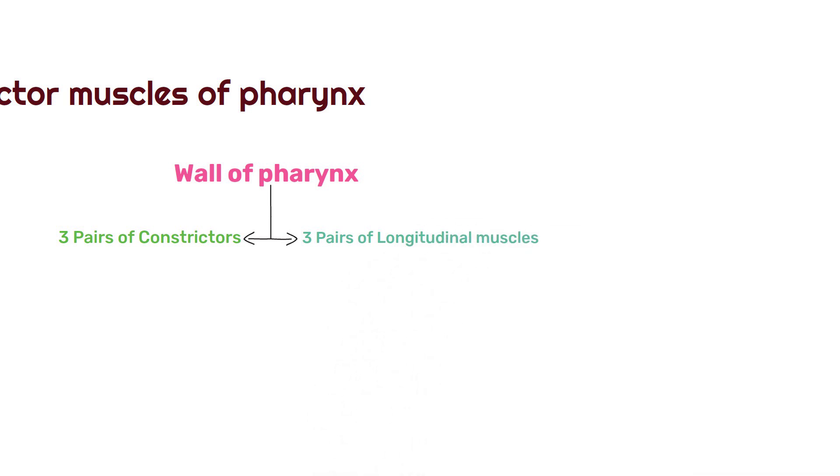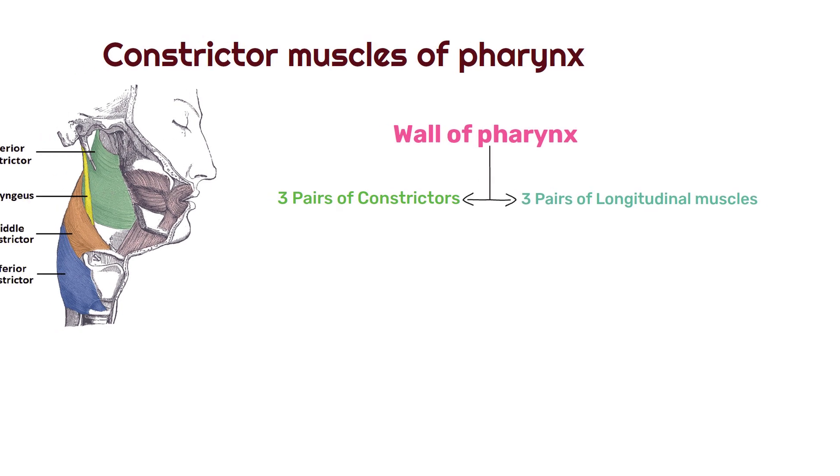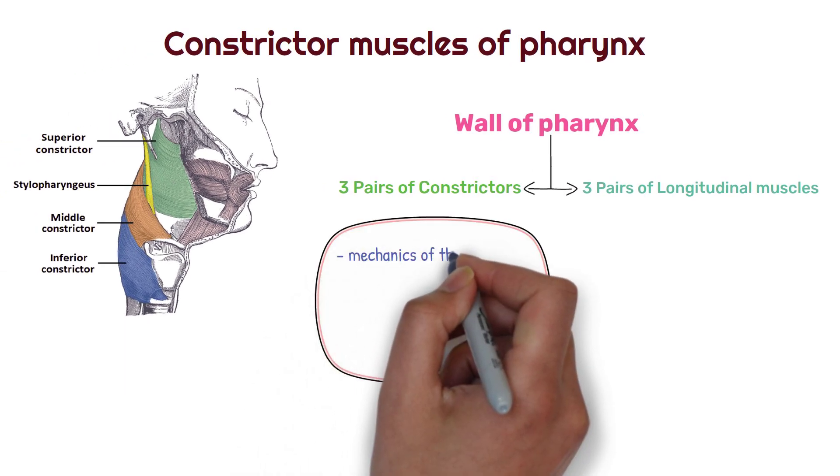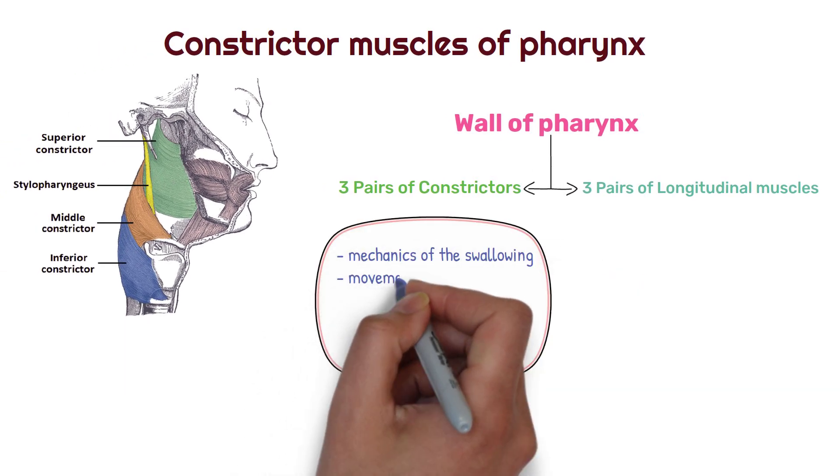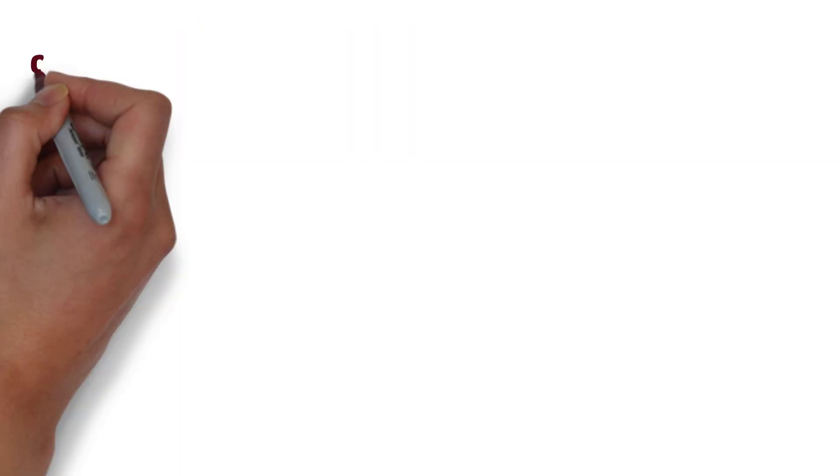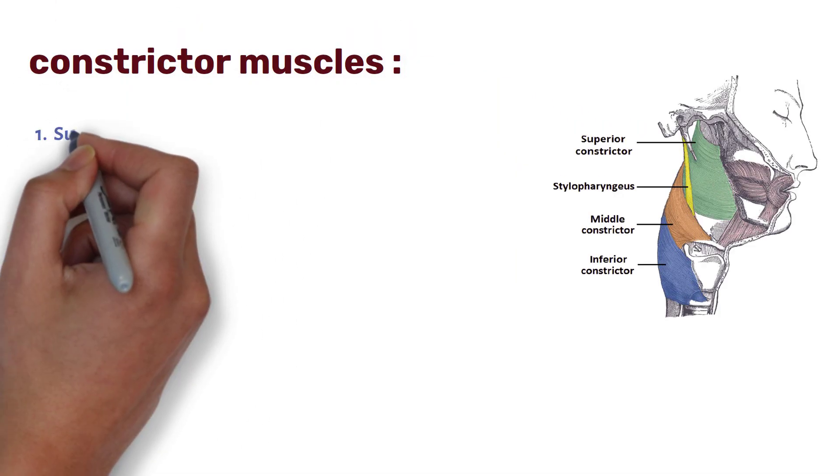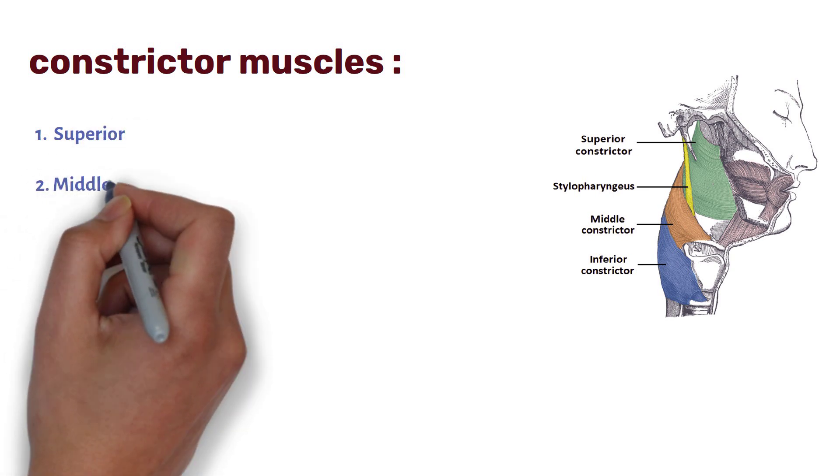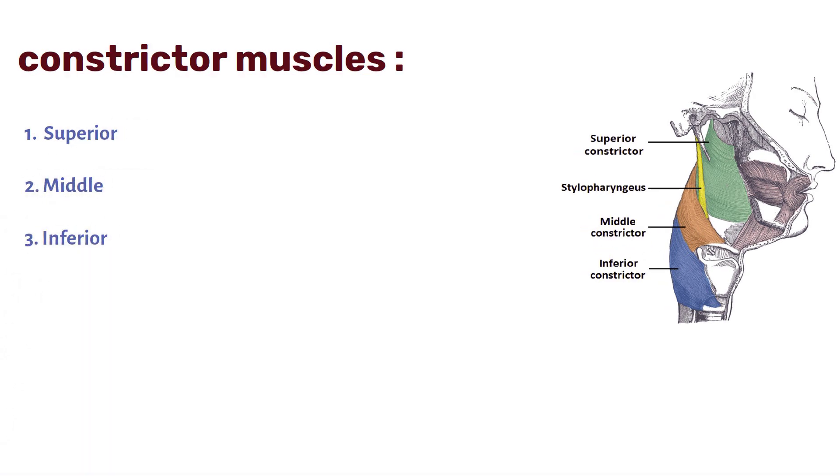Out of this, constrictors are of more importance. They are essential for mechanics of swallowing and allowing effective movement of the food. There are three primary constrictor muscles: superior constrictor, middle constrictor and inferior constrictor.